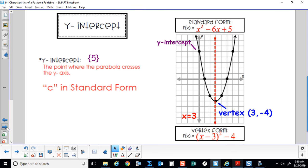The y-intercept in this instance is 5. It's the point where the parabola crosses the y-axis. It's c in standard form.